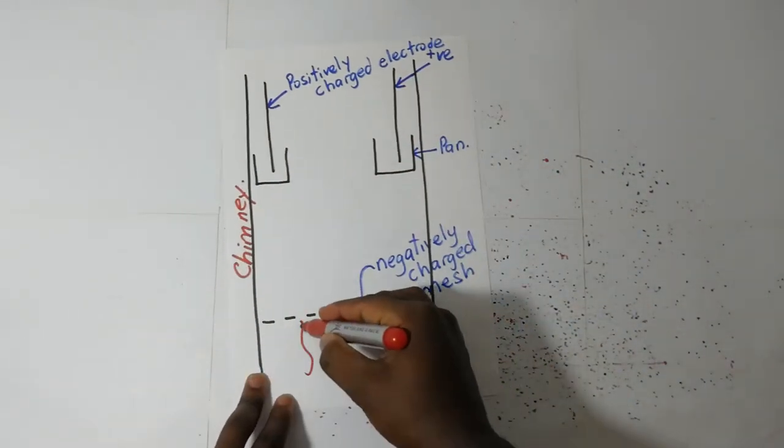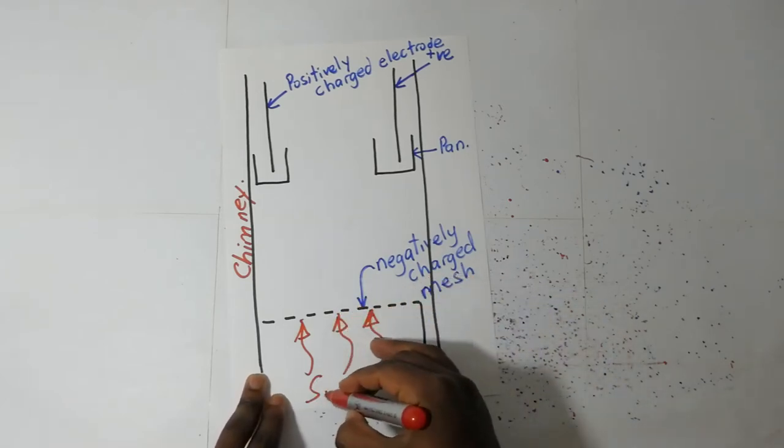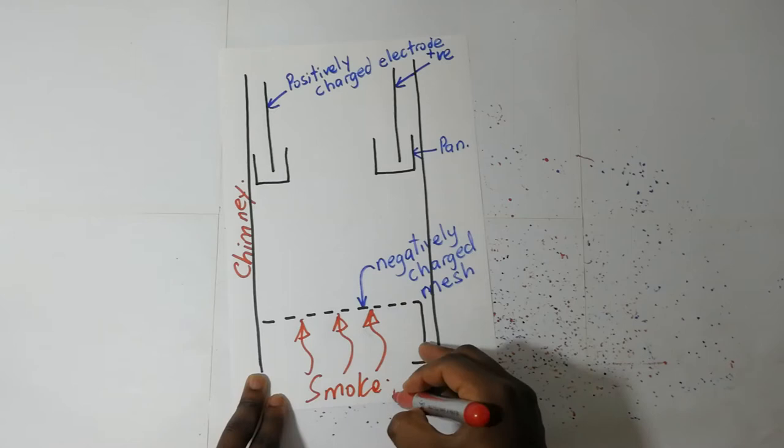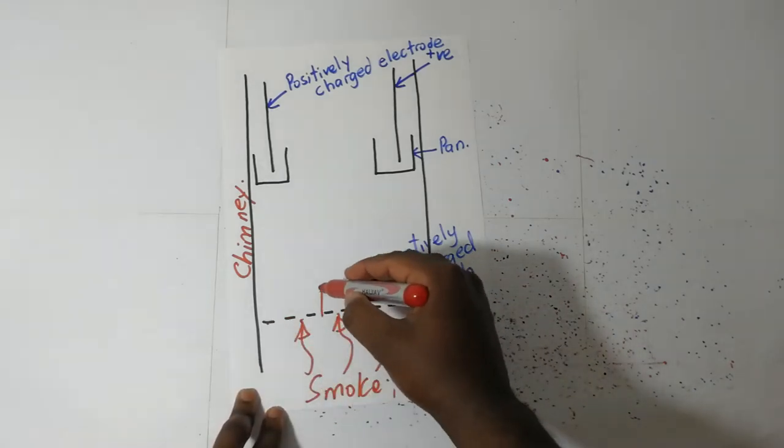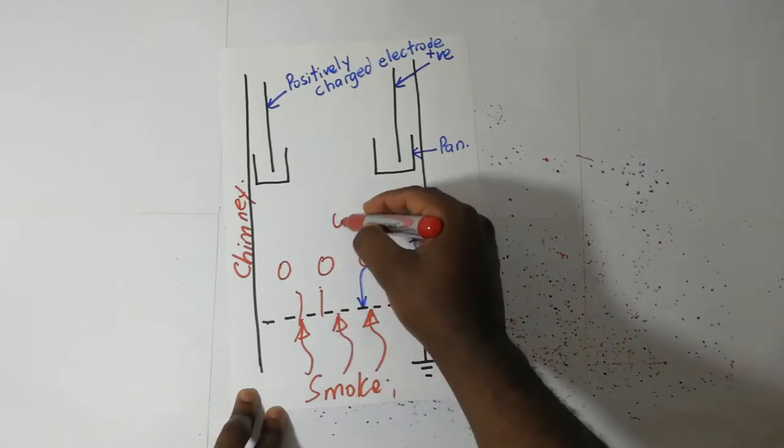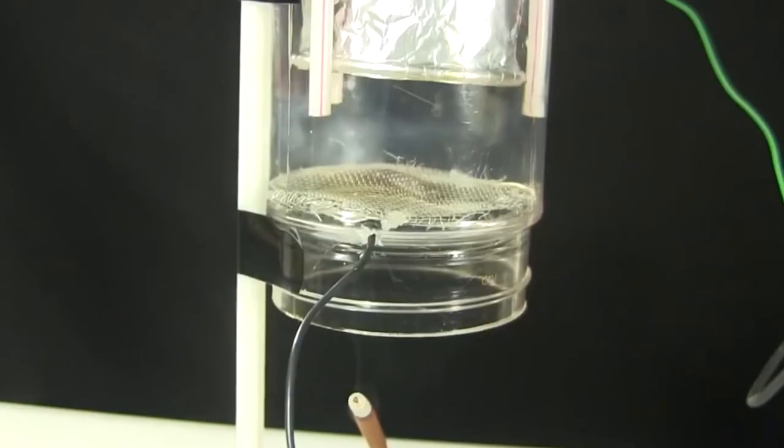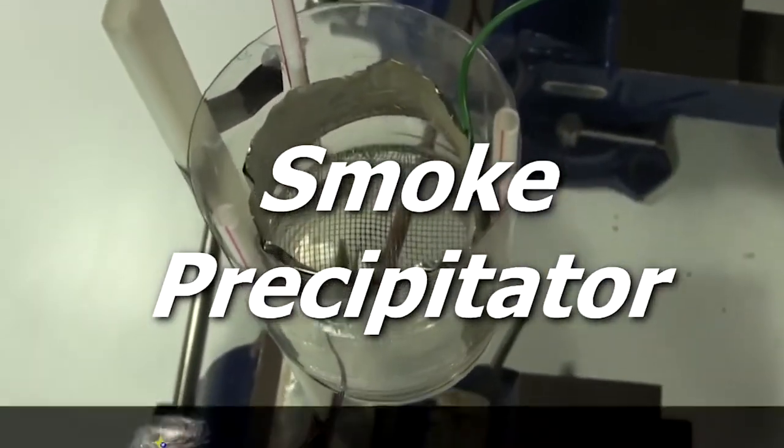These two right here are pans. What happens is that we have smoke coming in here. As this smoke comes in, it goes through these meshes. As these smoke particles come out here, they are negatively charged as they move up.